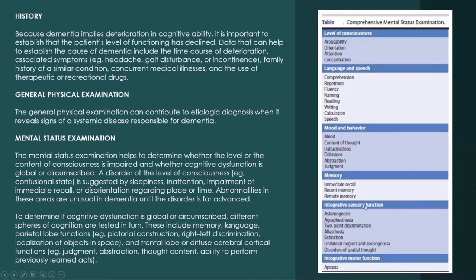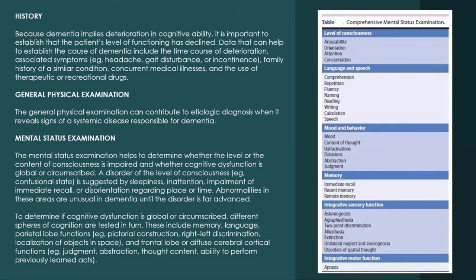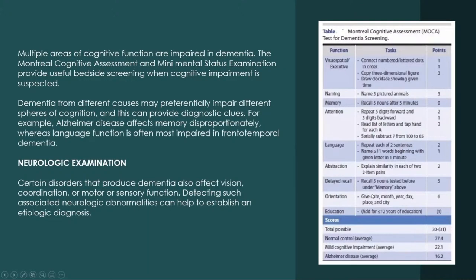Cortical sensory integration — stereognosis, graphesthesia, two-point discrimination, extinction, neglect — is part of the mental status exam. You are testing sensory integration in the cortex. Integrative motor function includes apraxia, which is loss of the ability to perform a learned skill like combing hair or brushing teeth. In patients with normal pressure hydrocephalus, there is gait apraxia — the patient has a magnetic gait where they cannot lift their feet and look like they don't know how to walk anymore.